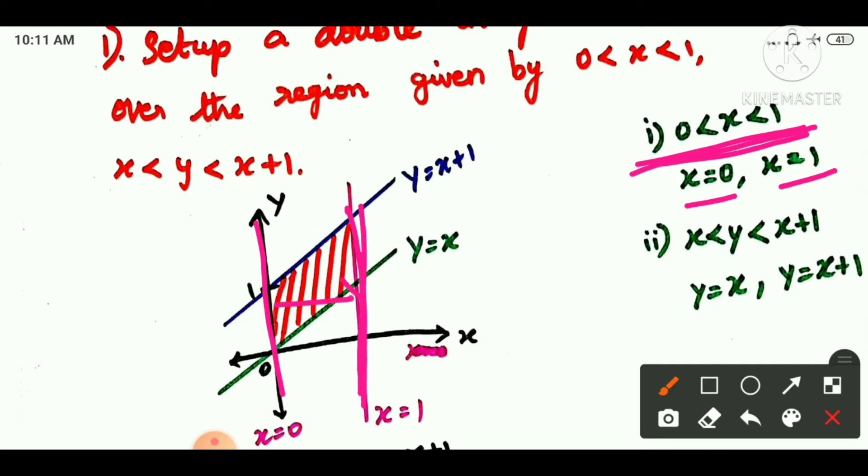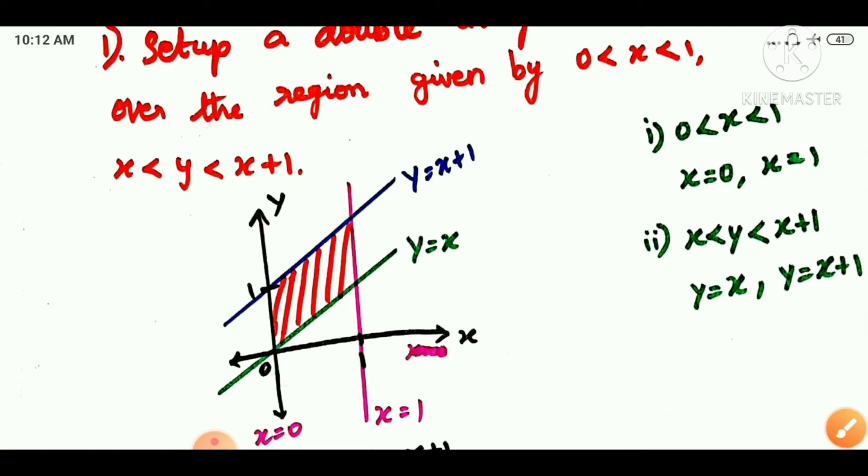In this range, x is between 0 and 1. We have the x limits. Now we need to look at the y values. The y value ranges from x to x plus 1, meaning y equals x and y equals x plus 1.